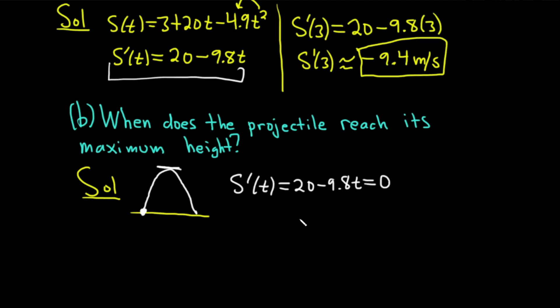All right, now we just have to solve this for t. So I'll subtract the 20 from both sides. So minus 20 minus 20, we have -9.8t = -20. And then just divide by -9.8, divide by -9.8. So we end up with t equals approximately 2 seconds.